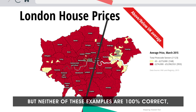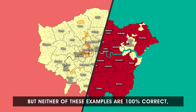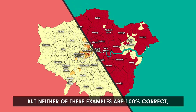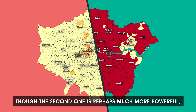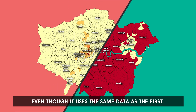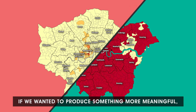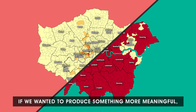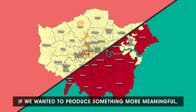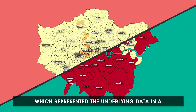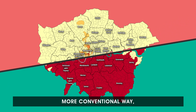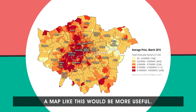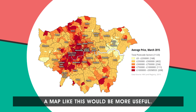But neither of these examples are 100% correct, though the second one is perhaps much more powerful even though it uses the same data as the first. If we wanted to produce something more meaningful which represented the underlying data in a more conventional way, a map like this would be more useful.